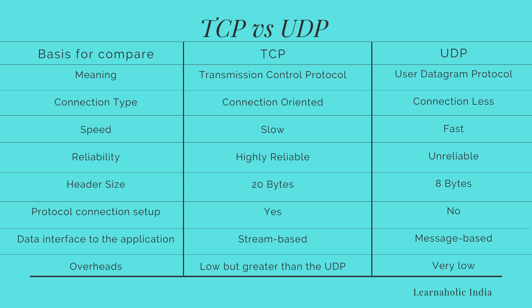In the comparison, TCP establishes a connection between computers before transmitting data, whereas UDP sends data directly to the destination without checking whether the system is ready. TCP stands for Transmission Control Protocol; UDP stands for User Datagram Protocol. TCP is connection-oriented whereas UDP is connectionless. The speed in TCP is slow whereas UDP is fast. TCP is highly reliable whereas UDP is unreliable. The header size in TCP is 20 bytes whereas in UDP it is 8 bytes.